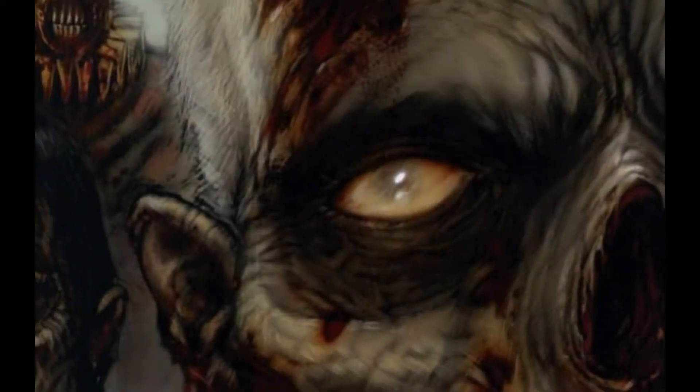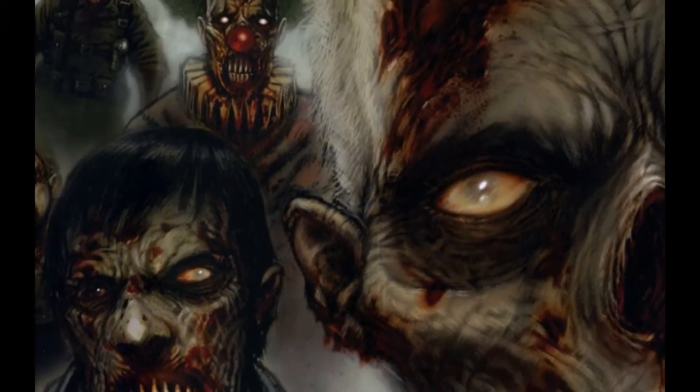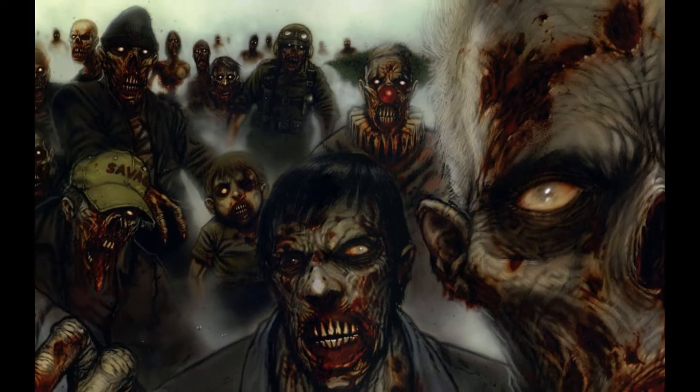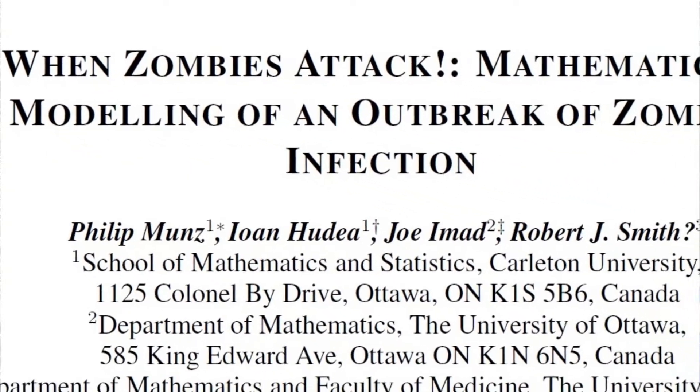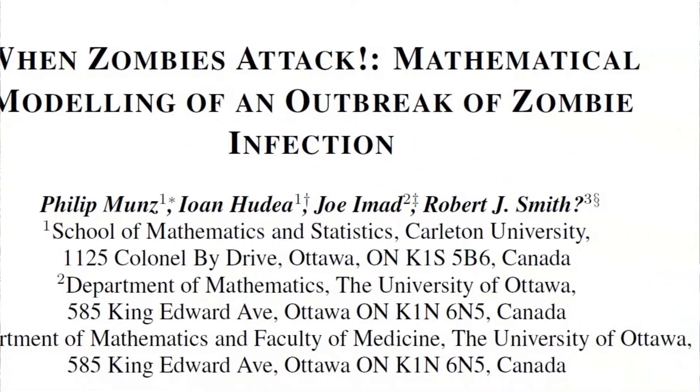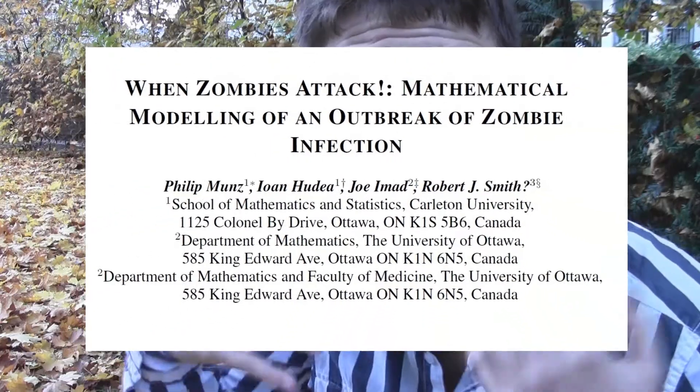The first question is: how can I analyze this science? The answer lies in a mathematical model. We want to understand what would happen if zombies were to attack. So we need a basic model. Who doesn't know zombie films? In zombie films there are three groups.